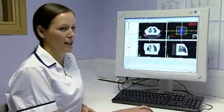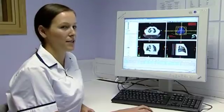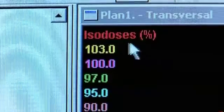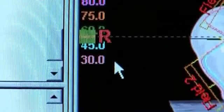So now we need to calculate the dose distribution and normalize the plan to the isocenter. The isodose lines all represent different percentages of the dose according to their color.